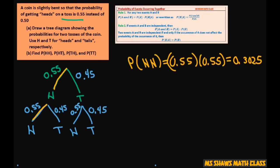Okay, probability of head tail. That's 0.55 times 0.45, and that's going to equal 0.2475.